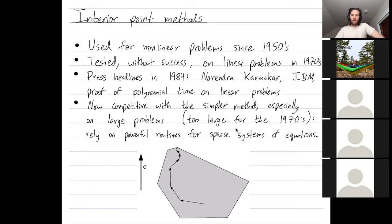Why didn't we know this back in the 1970s? The interior point methods are better on larger problems, and to solve them efficiently, you need powerful routines for sparse systems of equations, like Gaussian elimination for sparse systems, which now we have very fast routines for.